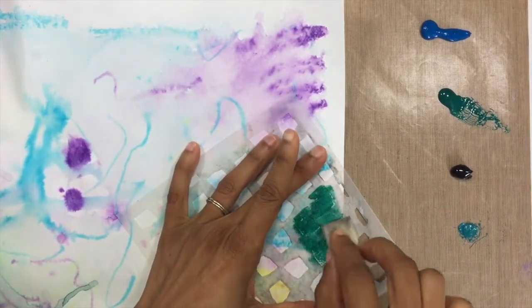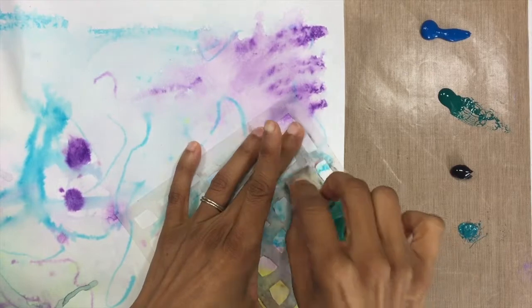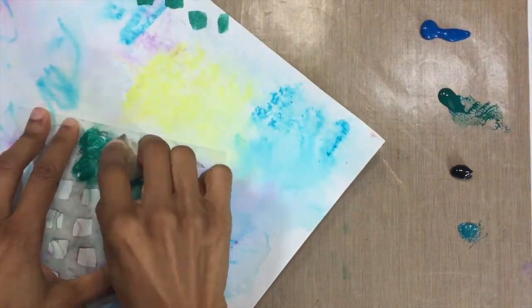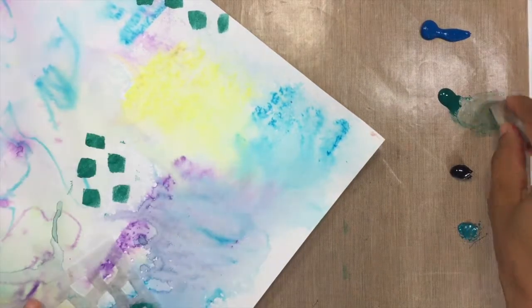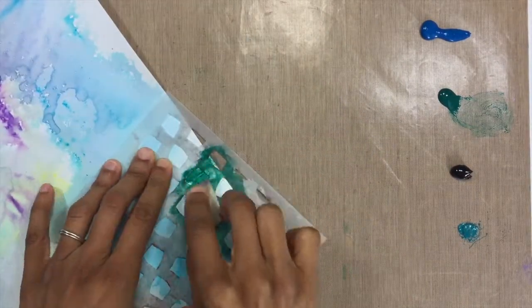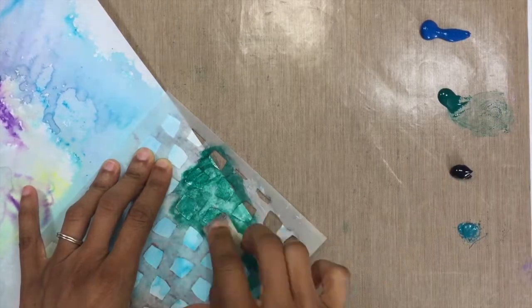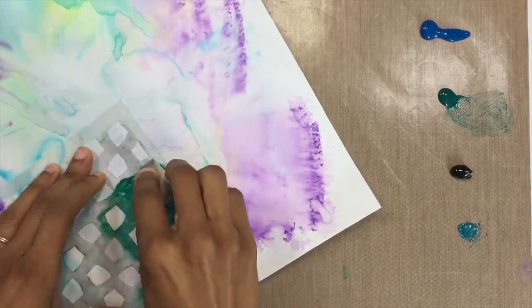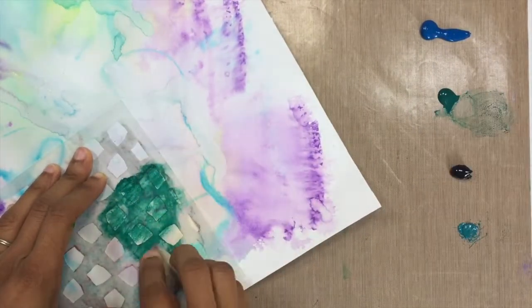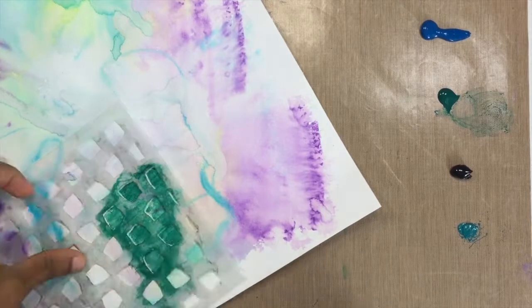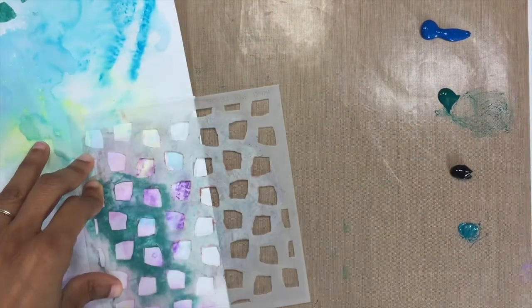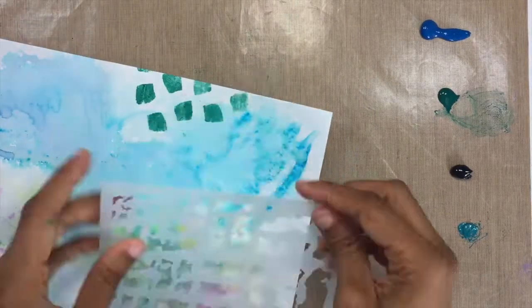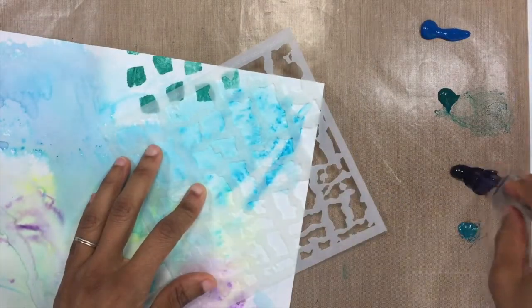That very first stencil I'm using with the viridian green is from the Stencil Club of February 2015 by Carolyn Dube. It's in that Pattern Play set she created back in 2015. I love this stencil—it's so great for background texture. You can use it on the foreground, but I really love it as a background texture stencil as well.